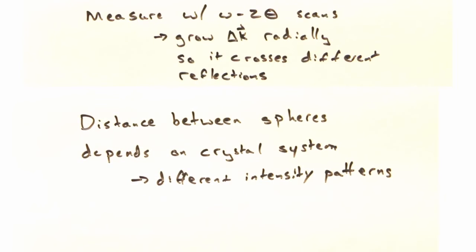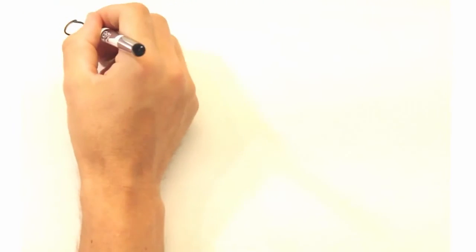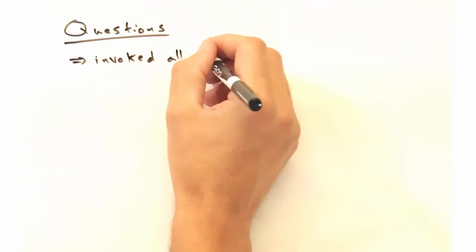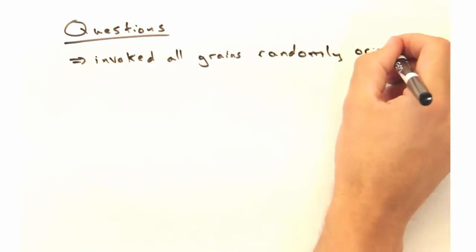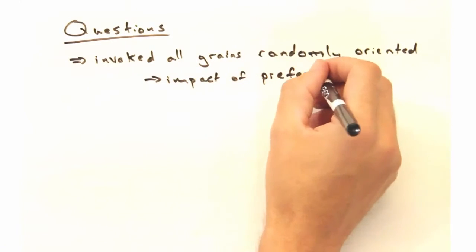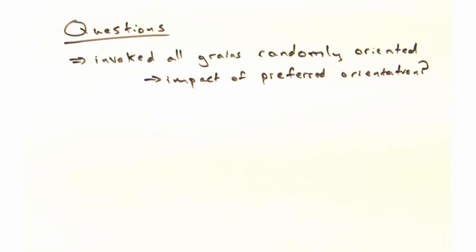Before we leave, we have a few questions for you to consider at home. We invoked at the beginning that all the crystal grains in a powder were randomly oriented. But suppose a significant amount of the grains were oriented in one direction. How would that manifest itself in the intensity spectra?